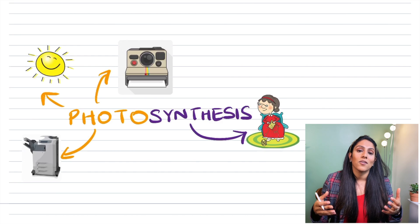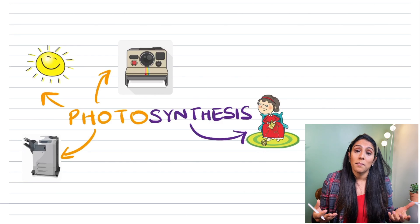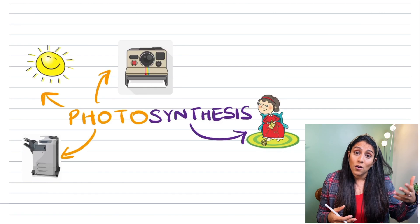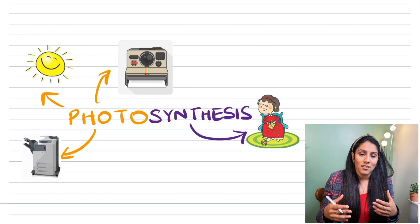Here I have the word photosynthesis. Now if I separate those two words what do they mean? The word photo comes from the word light, photons. Light is made out of photons and synthesis means to make.